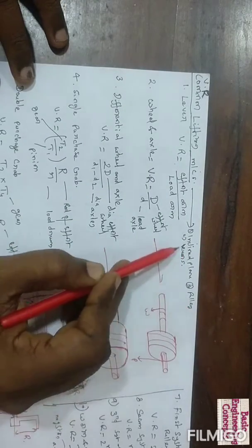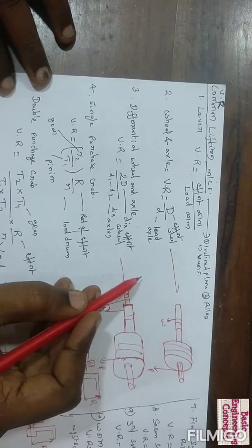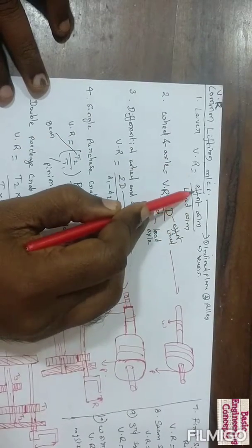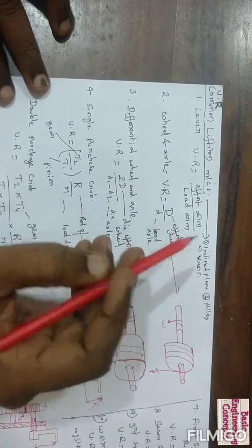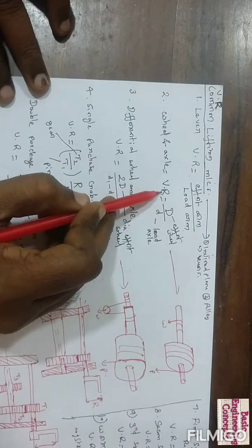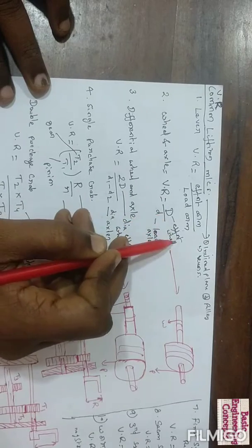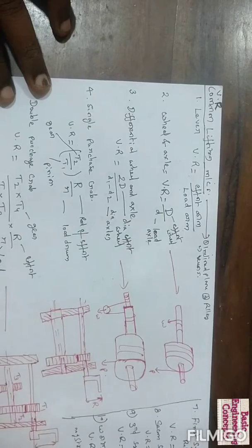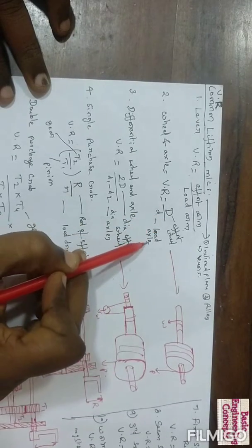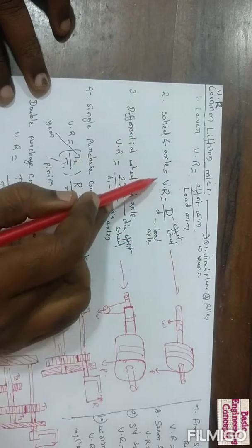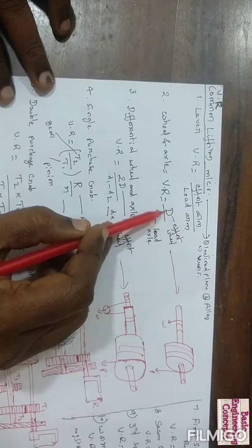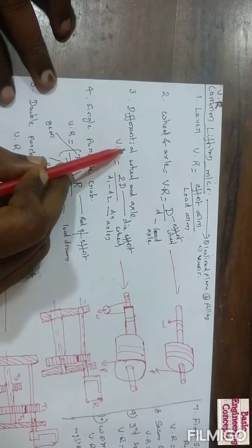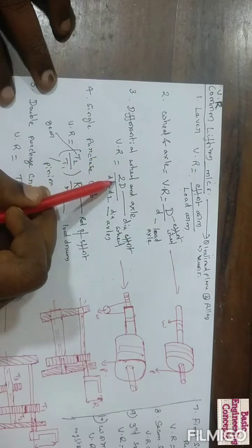The common lifting machines are inclined planes, pulleys, and levers. For a lever, velocity ratio equals effort arm divided by load arm. For a wheel and axle, velocity ratio equals diameter of the effort wheel divided by diameter of the axle — effort is always on top, load is always below. So velocity ratio for wheel and axle is capital D (effort wheel diameter) divided by small d (load axle diameter).